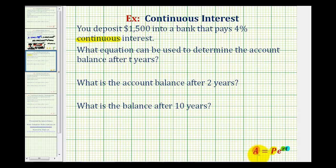So the formula for continuous interest is actually less involved than the formula for compounded interest. For this situation we would have A equals P, the starting amount, $1,500.